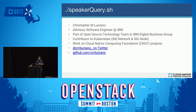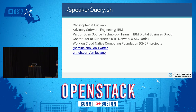So who am I? My name is Christopher M. Luciano. I'm part of the open source technology team at IBM Digital Business Group. I'm blessed with being able to work on Kubernetes full time. I mostly concentrate on SIGNode and SIGNetwork. My GitHub handle is on there and my Twitter ID.